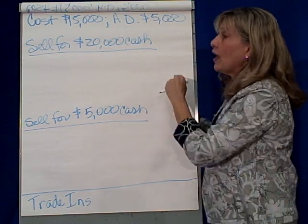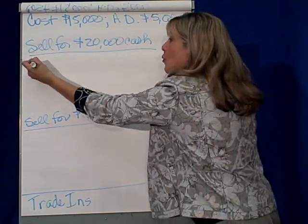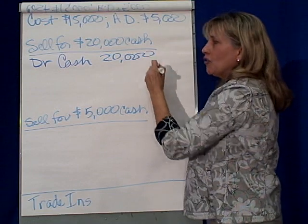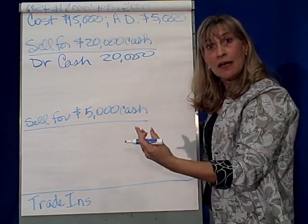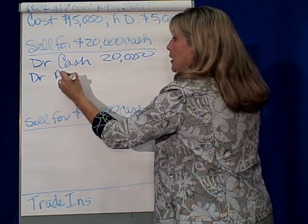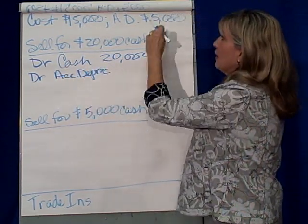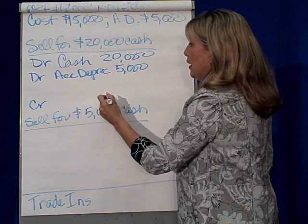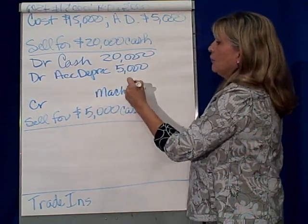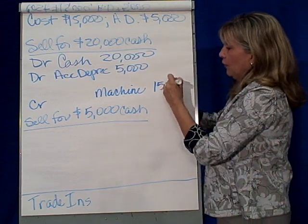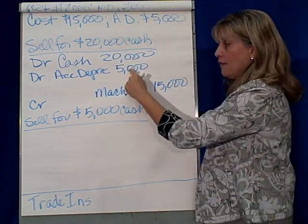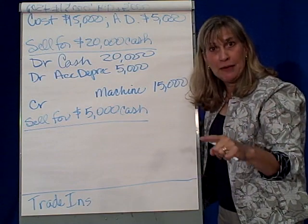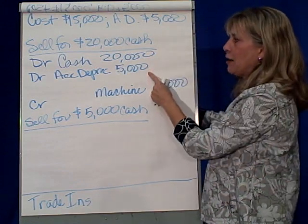When we sell for $20,000 cash, what do I get? I get cash of $20,000, so I debit cash $20,000. What did I give up? I gave up accumulated depreciation — I have to get that off the books — for $5,000. Then I credit the machine for its cost of $15,000. So I got cash, I gave up the machine and its accumulated depreciation, and that's off our books. Now I check: do debits equal credits? I've got debits of $25,000.